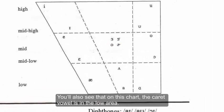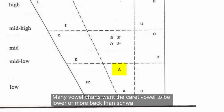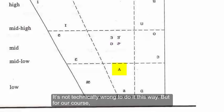You'll also see that on this chart, the caret vowel is in the low area. Many vowel charts want the caret vowel to be lower or more back than schwa. It's not technically wrong to do it this way,